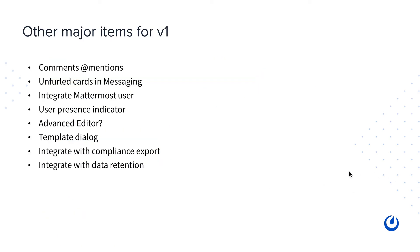Other items we're looking at for V1 include: improving the comment system to support at-mentions and potentially integrating messaging threads with comments; unfurling cards in messaging so pasting a link shows a preview of that card; tighter integration with the Mattermost user system; a user presence indicator to show who's editing what; an advanced markdown editor; improvements to template dialogues and other UX improvements; and additional enterprise features such as compliance export and data retention integration.